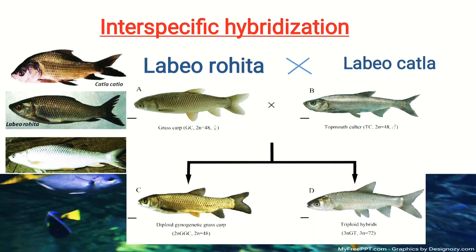Another example of interspecific hybridization is the cross between Labeo rohita and Labeo katla. For interspecific hybridization, we just have to remember what crosses are done.